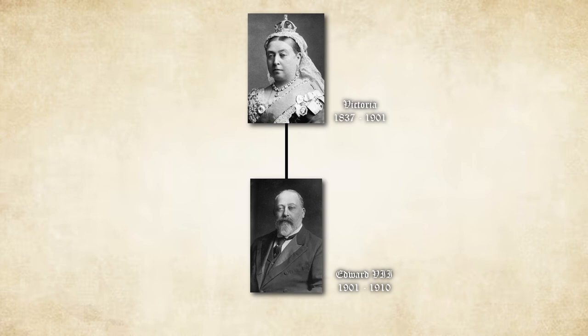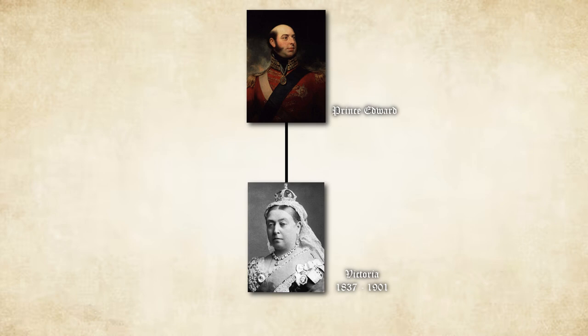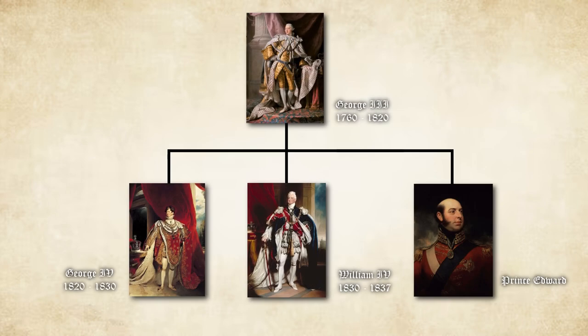Queen Victoria was able to become queen because her father was Prince Edward, the Duke of Kent. Now Prince Edward the Duke of Kent was not a king — he was not really in line for the throne. He was the third son of the monarch George III and had two elder brothers. Edward's eldest brother was George IV, who reigned from 1820 to 1830 and died without any legitimate children. The crown then passed to his younger brother William, who became William IV, who also died without any legitimate children, and thus the crown passed to Edward. Unfortunately Edward was dead at the time, so it instead went to his daughter Queen Victoria.